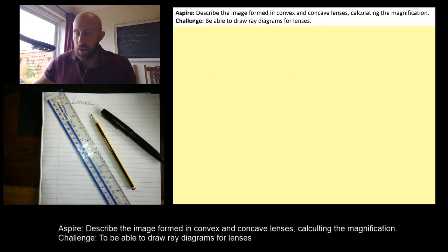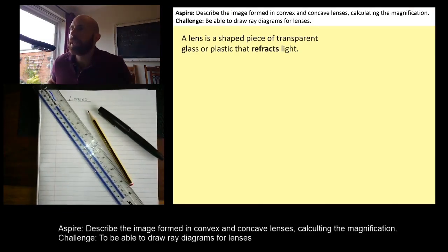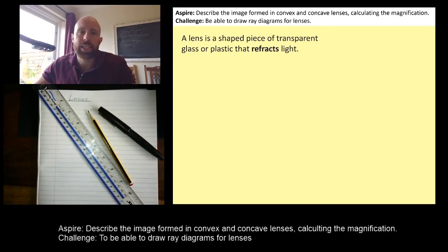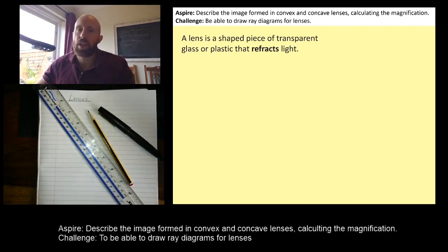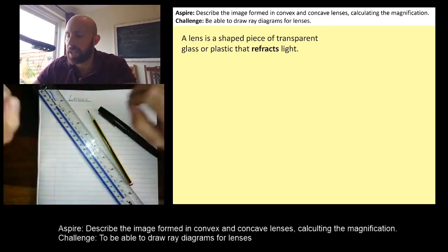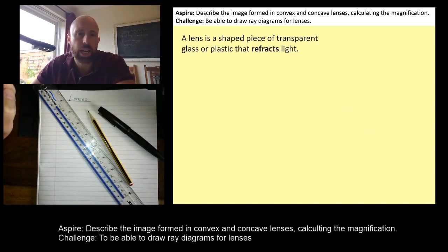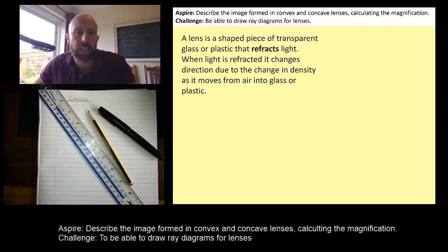So let's start off with this: what is a lens? A lens, as it says on the PowerPoint there, is a piece of transparent glass or plastic that refracts light. We should have done refraction before — that's why it's on the starter. Refraction means that it causes light to slow down or speed up depending on the density, and therefore change direction. So a lens changes the direction of light.